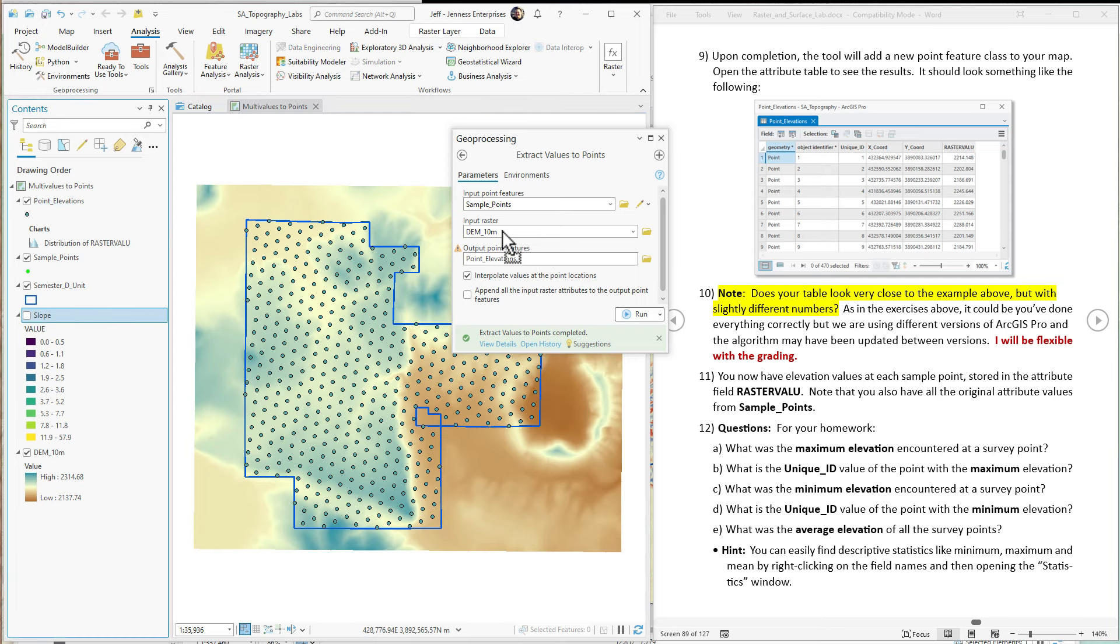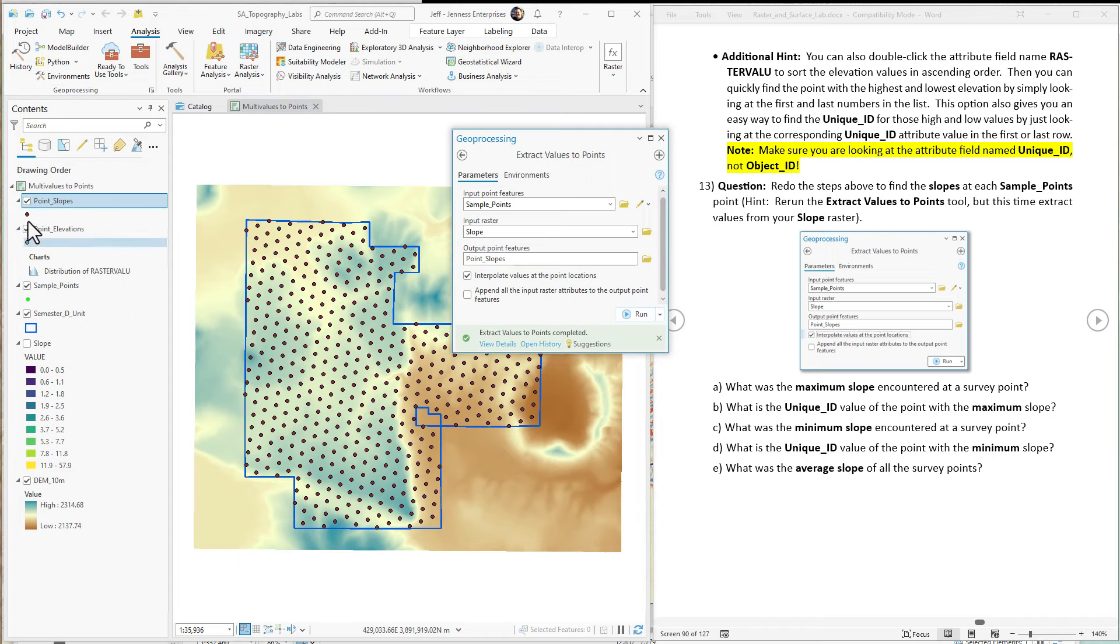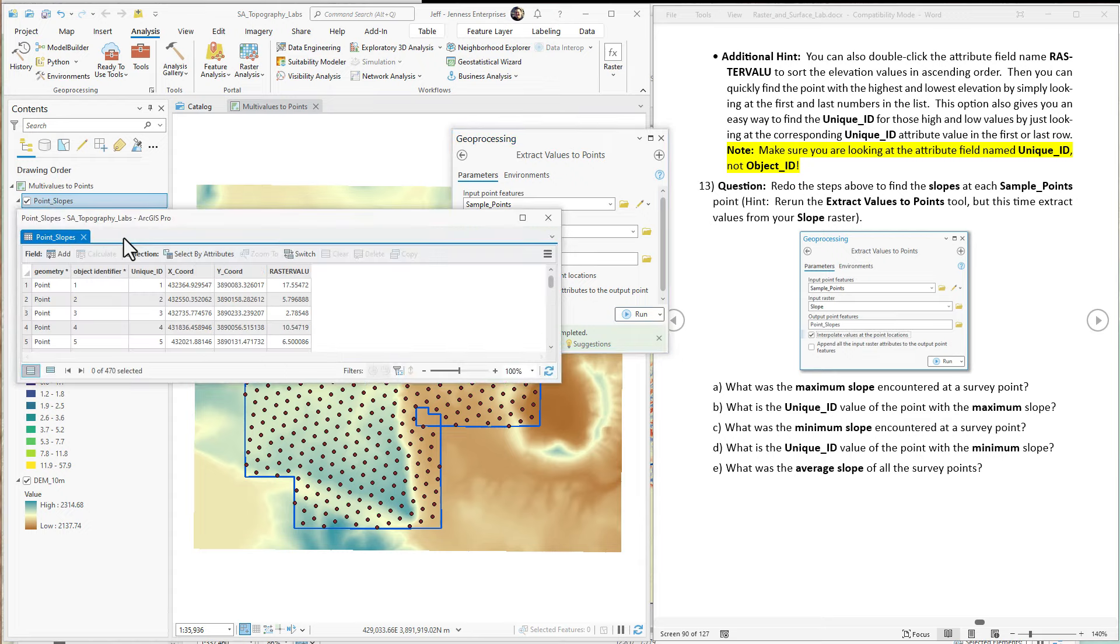We're going to call this point slopes. We're going to interpolate again because that's more appropriate for slope data. Hit run. Have a new feature class of point slopes. Open up the attribute table of that. Here's our slope values at each point.